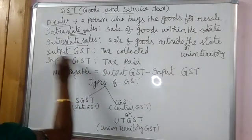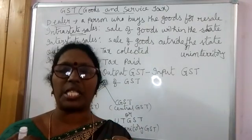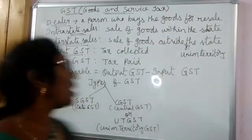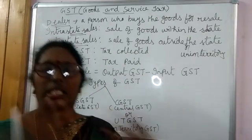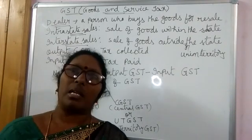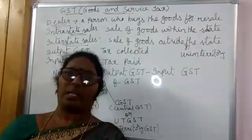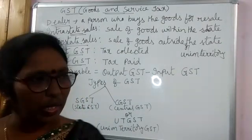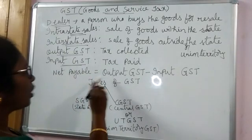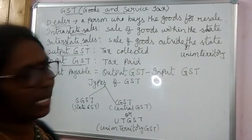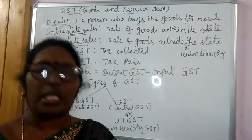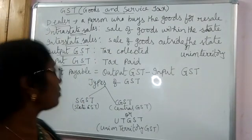What is output tax? Output tax means GST collected — tax collected is output tax or output GST. And what is input GST? Tax paid is input GST. Whoever is in the selling chain: tax collected is output tax, tax paid is input tax. Net payable is output GST minus input GST. Output GST minus input GST gives you the net amount that person has to pay to the government.